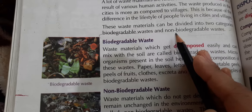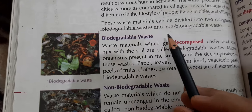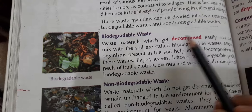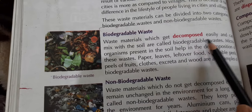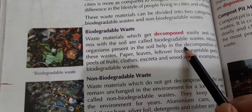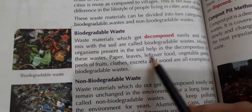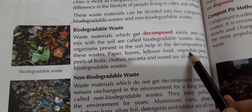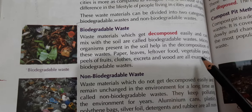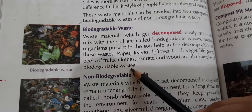Biodegradable waste: waste material which gets decomposed easily and can mix with soil is called biodegradable waste. Microorganisms present in the soil help in the decomposition of this waste. Paper, leaves, leftover food, vegetable peels, peels of fruits, clothes, excreta, and wood are all examples of biodegradable waste.